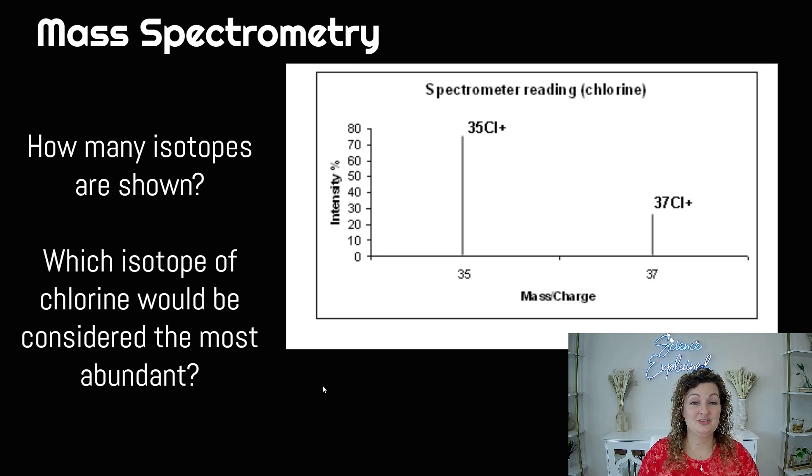All right, mass spectrometry, something completely different, but we're still talking about isotopes. We're still talking about their abundance. Now we're just putting it in a graphical form. So how many isotopes are shown? Each isotope is shown by a line on the graph. So you can see we have one line and we have a second line. So we have two isotopes shown on this graph.